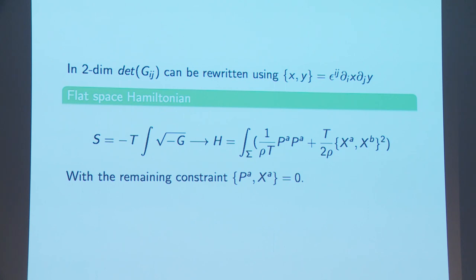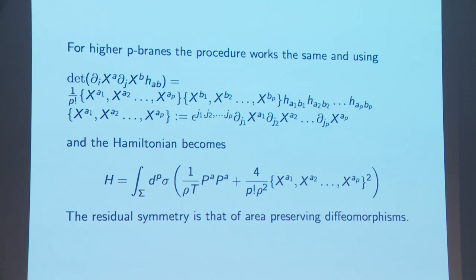The obvious thing then is to go to quantization and replace the Poisson brackets with commutators. This looks like one should be able to make further progress and really quantize this system properly without going to any non-commutative version of it. However, to the best of my knowledge that has not been successful — I'm sure somebody here will let me know if there's some promising progress on that.